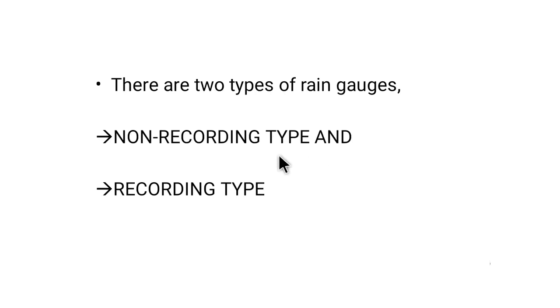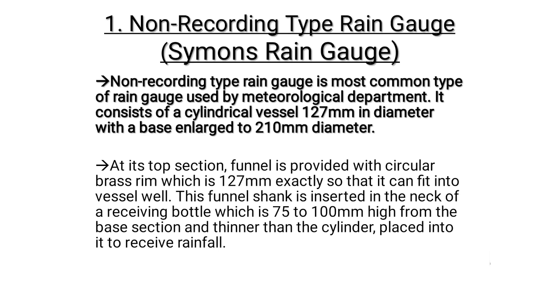In this video we're going to learn about the types of rain gauges — how many types there are and how they work. There are two types of rain gauges: non-recording type and recording type. The non-recording type, for example, is Simpson's rain gauge, which is the one used in the meteorological department for finding out rainfall.